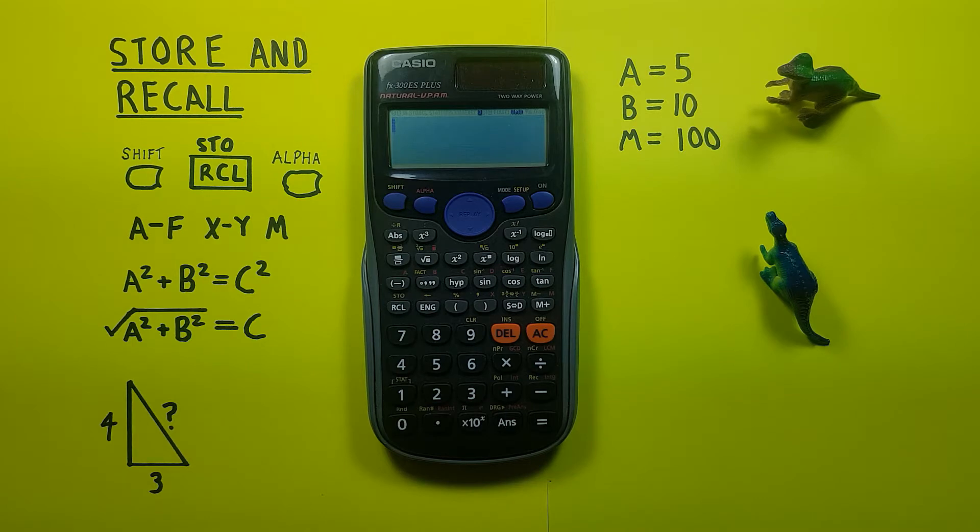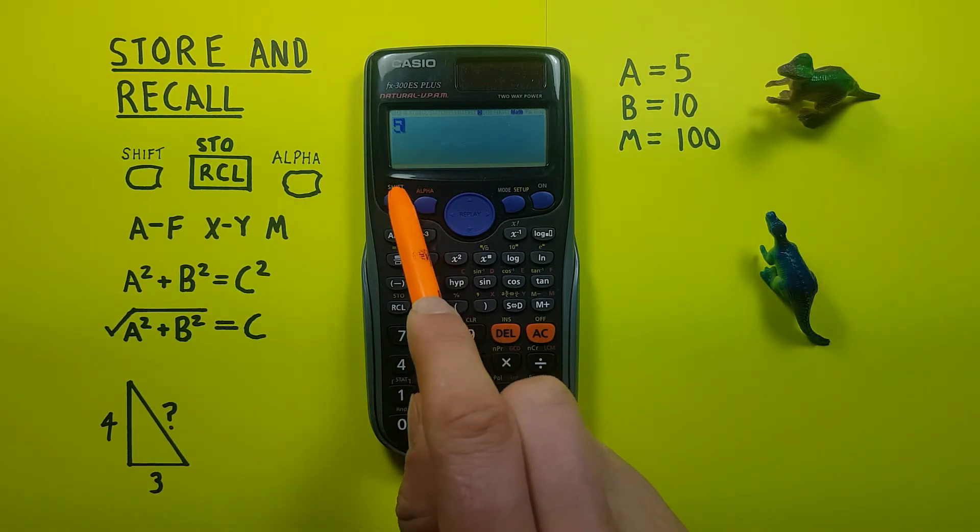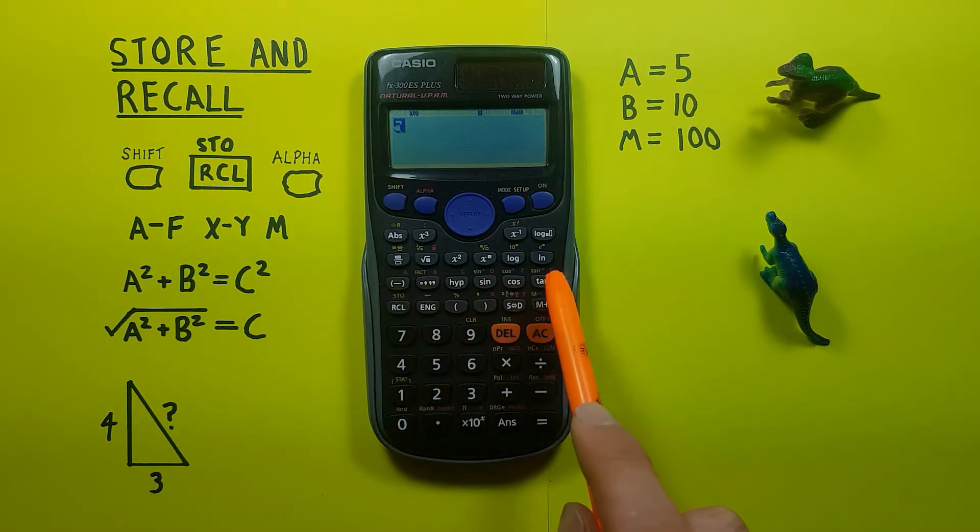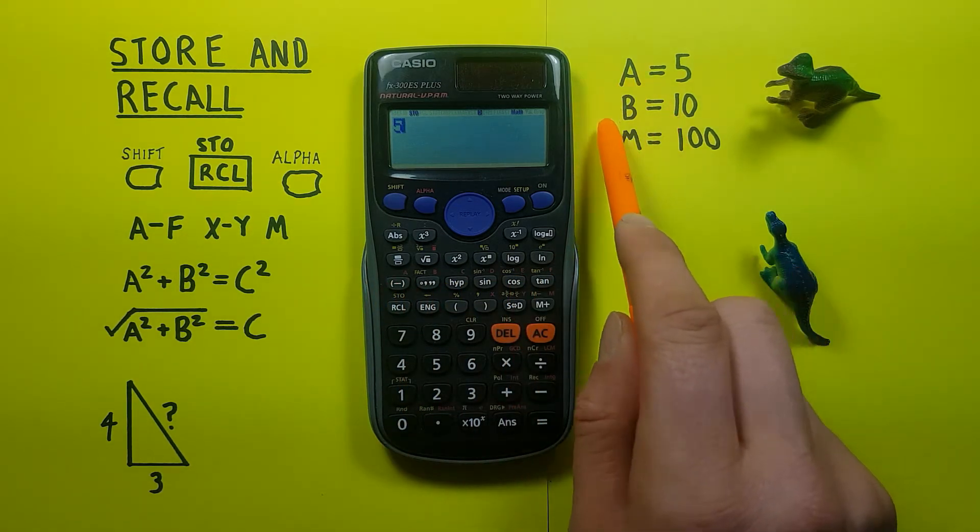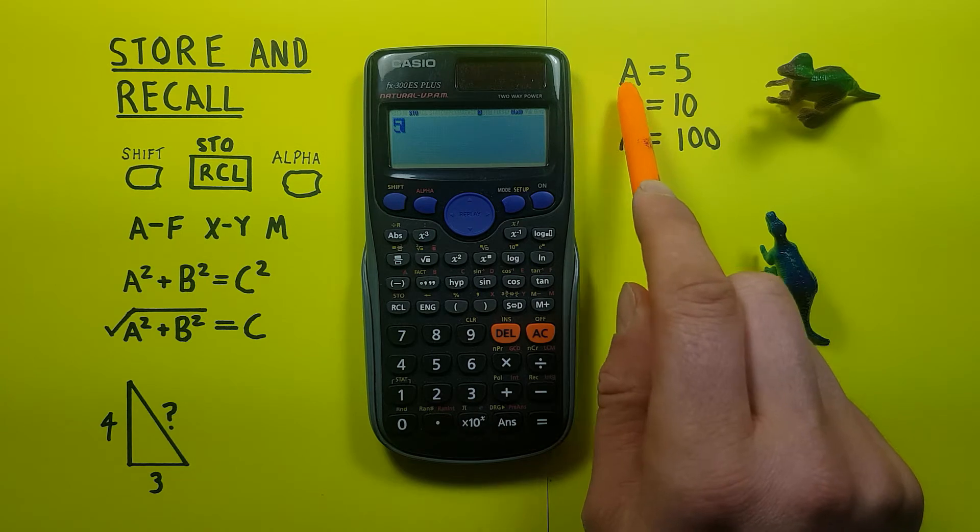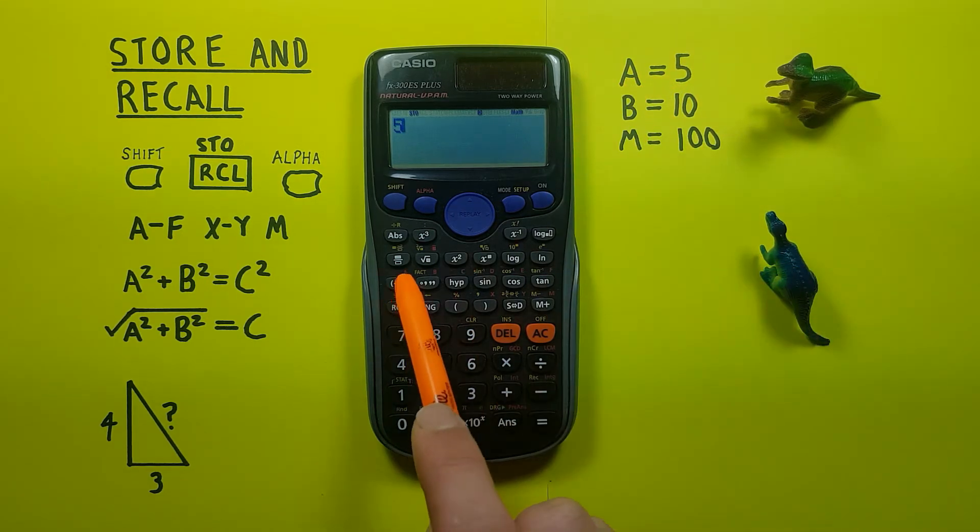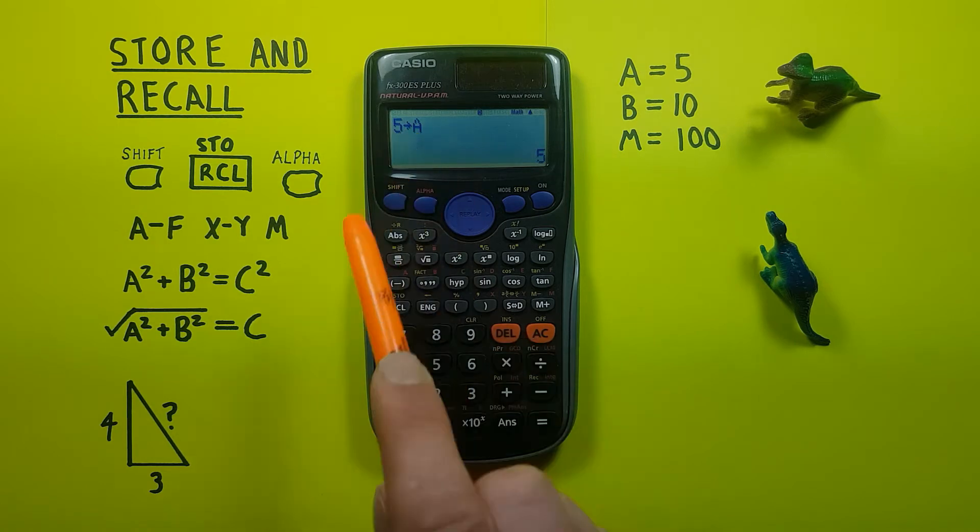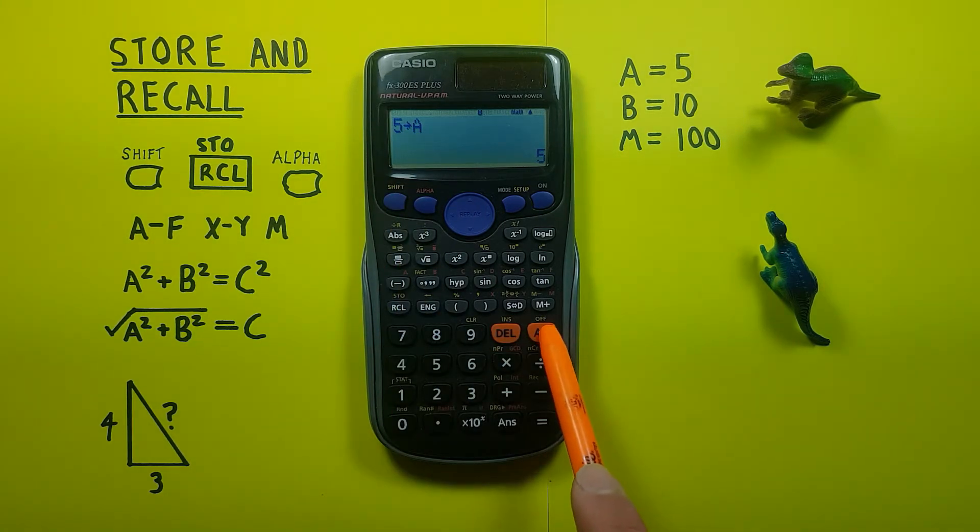All right, so for the basics, if we just want to store a value, we can place it on the screen, then press shift and then the RCL STO key because the shift function of this key is to store a value. And then we want to choose where we want to store that. We'll use these examples, so let's put 5 into A. So we'll press that there, you see 5 into A will appear on your screen there you go.